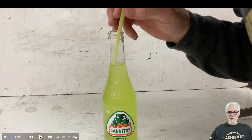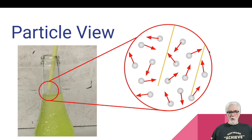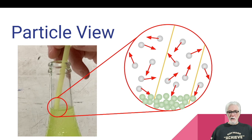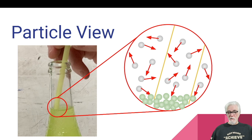Now I've stuck the straw into the liquid but have not yet begun to drink. Let's take a particle view to see how things are changing. Not much has changed — the same air that was inside the straw before is still there, just trapped because there's liquid at the bottom. The liquid particles are much closer together because liquids are more dense, and they're not moving nearly as fast as gas particles. The density of air particles inside and outside the straw is the same, but those particles are now isolated because the liquid closes the entrance.